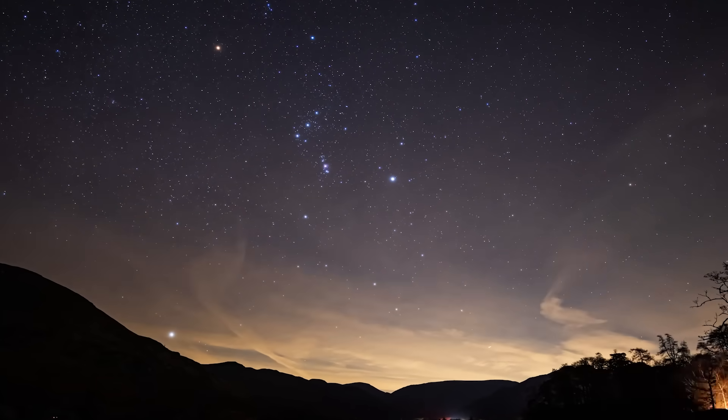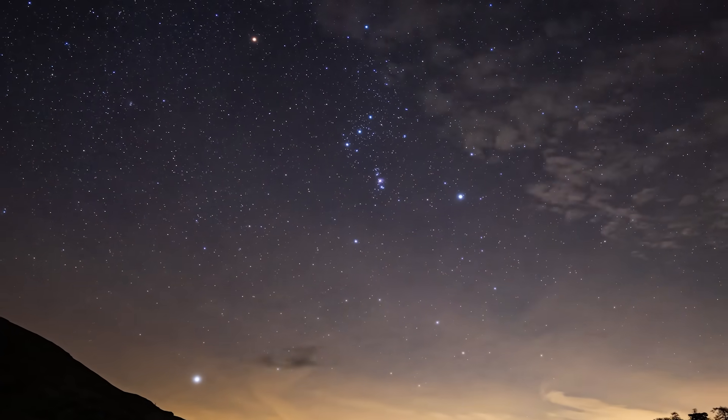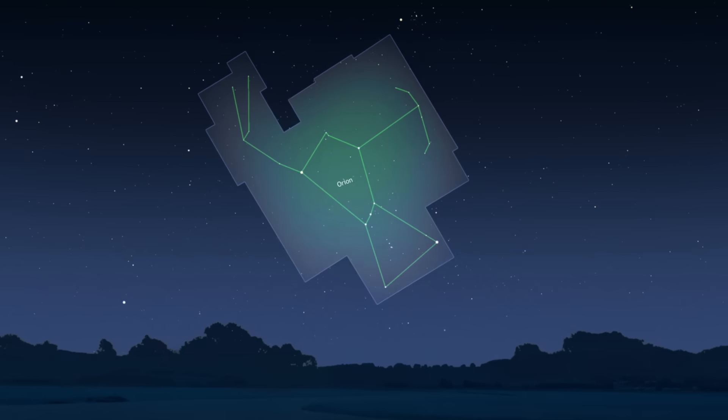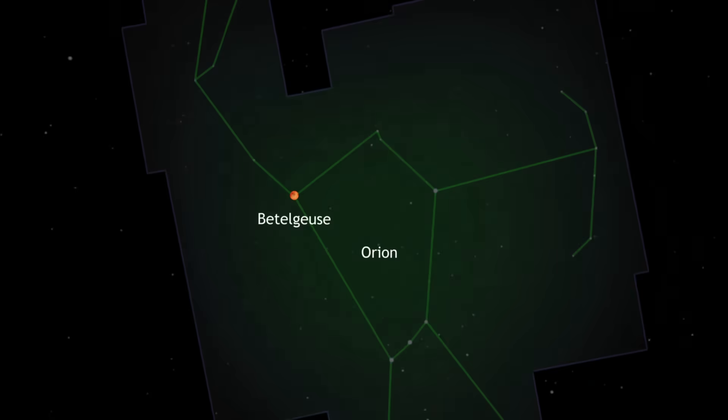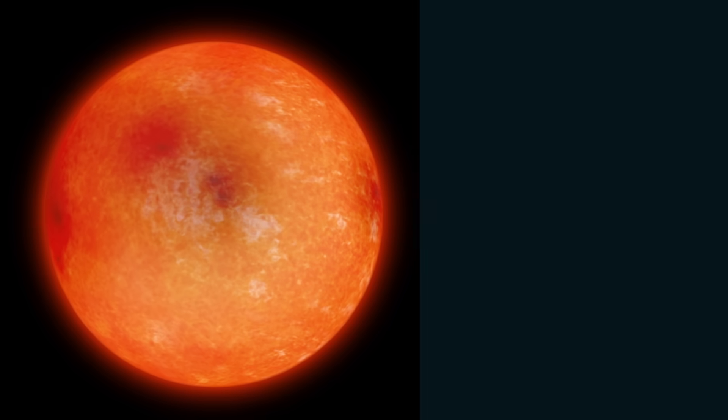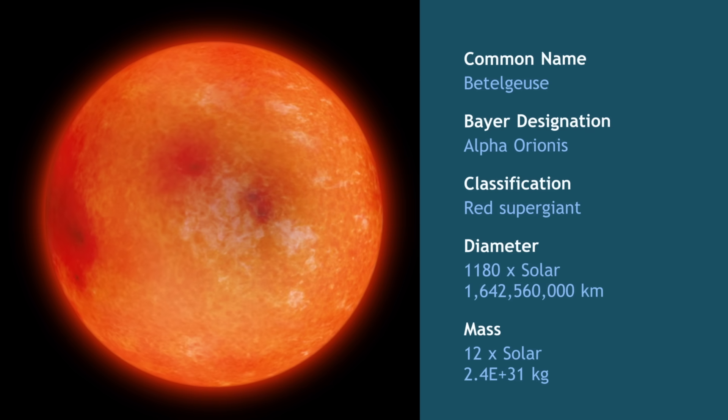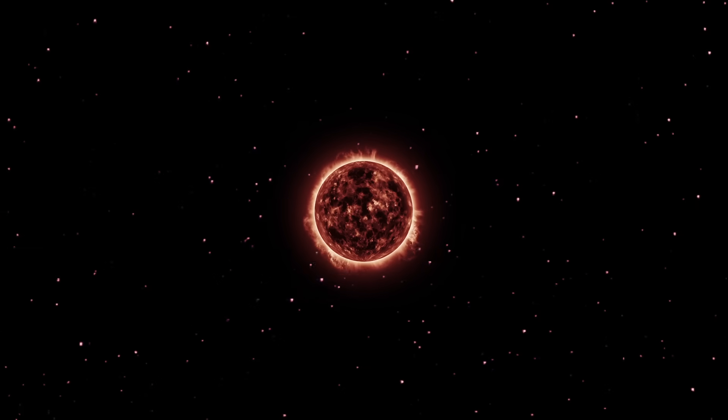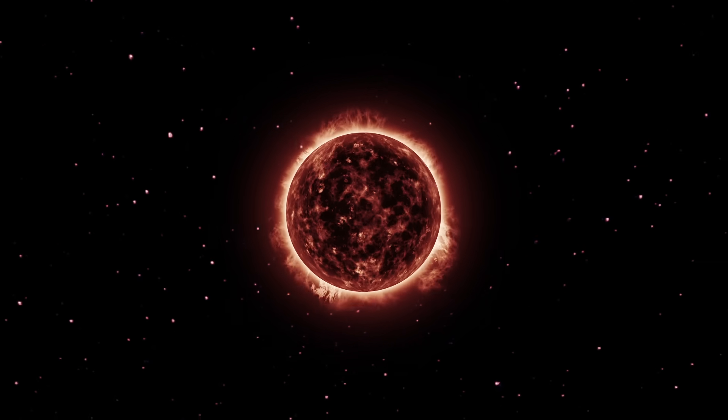For as long as humans have gazed at the night sky, Betelgeuse has captured our attention. Situated on the shoulder of Orion the Hunter, this massive red star glows with a distinct reddish hue. It's one of the largest and most luminous stars we can see with the naked eye. But Betelgeuse isn't just impressive, it's also dying.